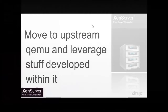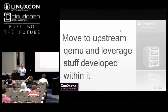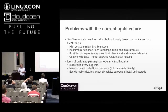We also want to make sure we're following good practice within the Xen project, so moving to the upstream QEMU is important for us. We're doing that very soon — we're on a very old version of QEMU, the original Xen fork. As the Xen project itself has moved to upstream QEMU and it's now the default in Xen 4.3, ZenServer's going to follow suit. There's lots of value in doing that.